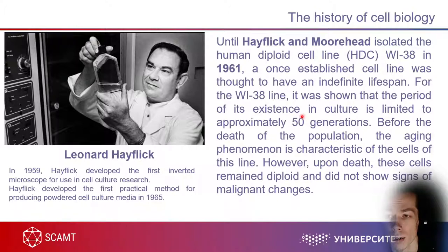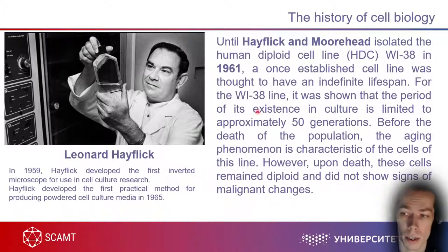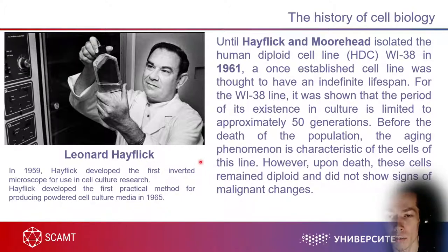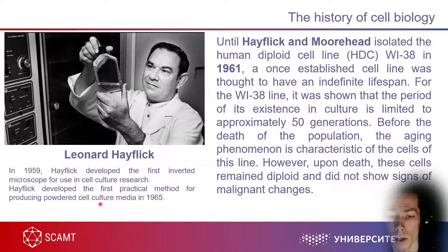Around three years later, Eagle investigated what the nutritional requirements should be to grow human cells — it was very hard to understand what the composition of cell media should be to maintain growth. Probably the most important man still alive is Leonard Hayflick, who in 1961 found what is now called the Hayflick limit — the division limit for cells — of about 50 generations. After this, the cell dies because of telomere shortening.